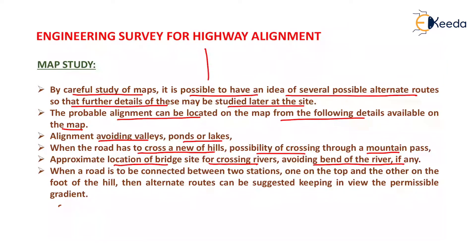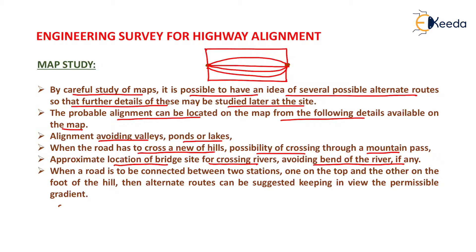Generally we have the topographic map of a particular area where we are going to finalize our alignment. Suppose we have to connect two points by a particular road, so we will finalize a set of alignments. After selecting alignments along these two points, we need to select at least one or two alignments which will carry the maximum traffic and have the minimum number of obstructions. Approximate location of bridge sites are also found on this map.